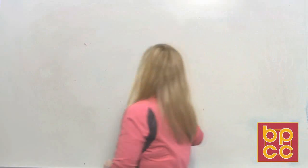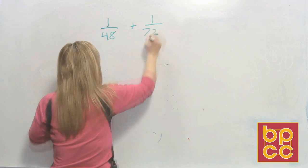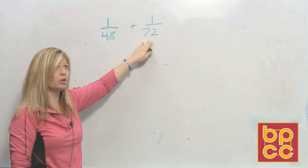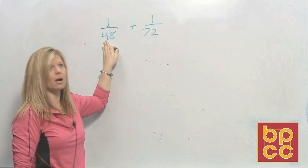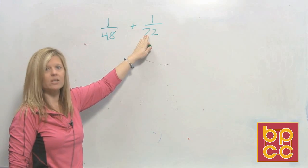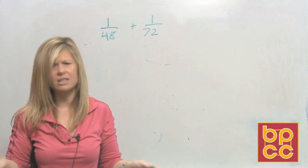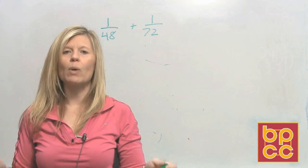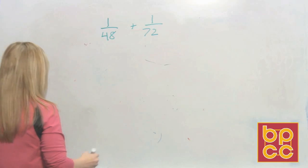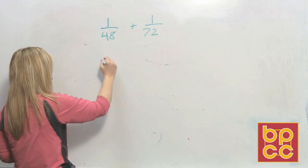There are two ways. The long way would be to list the multiplication tables of 48 and 72 — doing 48 times 1, times 2, times 3, times 4, and 72 times 1, times 2, times 3 — until you hit a number they have in common. Well, that's crazy; it takes too much time. The correct way to get an LCD is to use your factoring skills. So if we go back to third grade, you're going to factor each of the denominators.